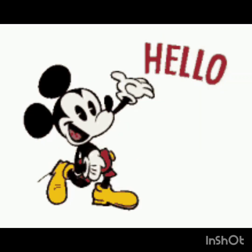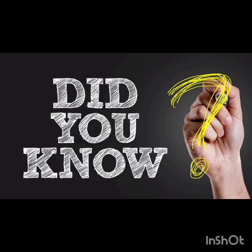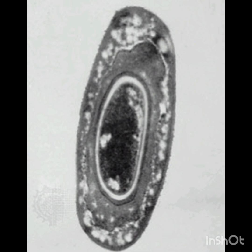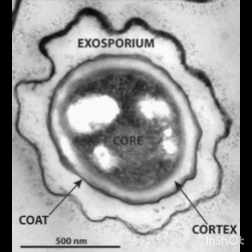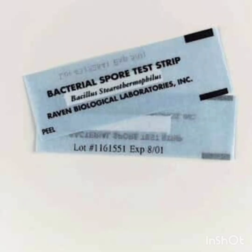Hello students. Today we will study about bacterial spores. Bacterial spores are the resting or dormant stage structures in the bacterial life cycle. In unfavorable conditions, they are highly durable structures and can germinate even after years of dormancy. Bacterial spores are used as an indicator for proper sterilization of the autoclave.